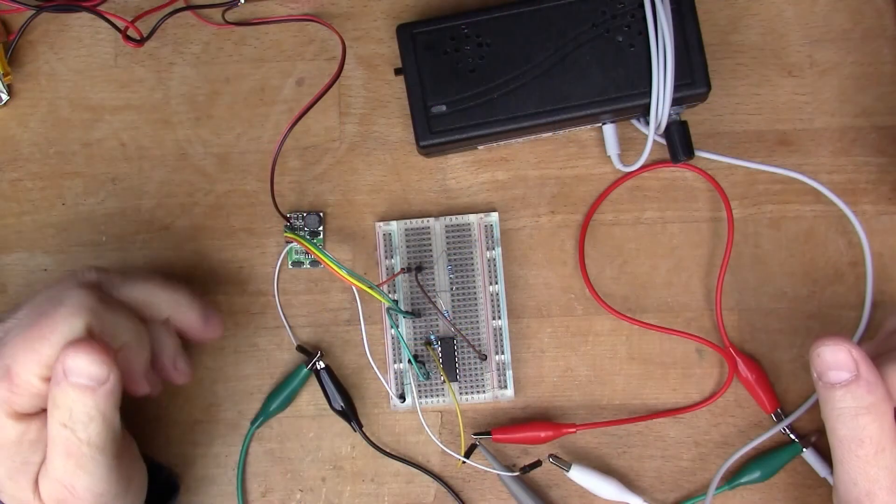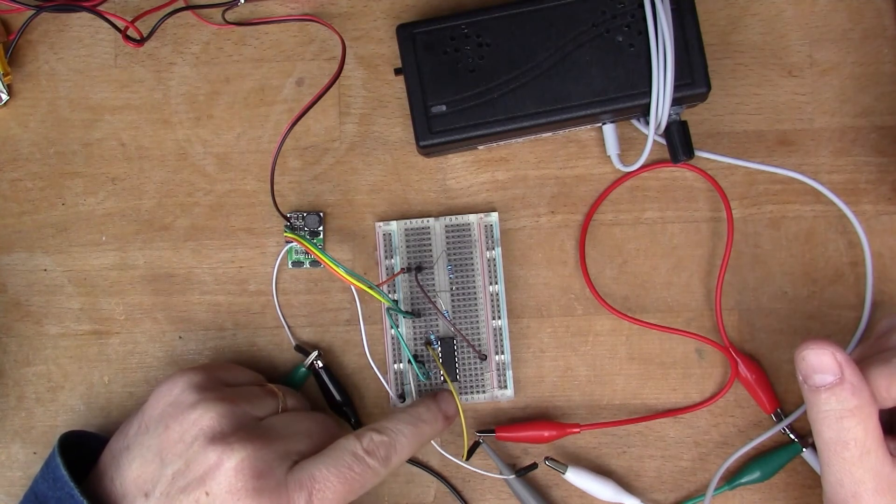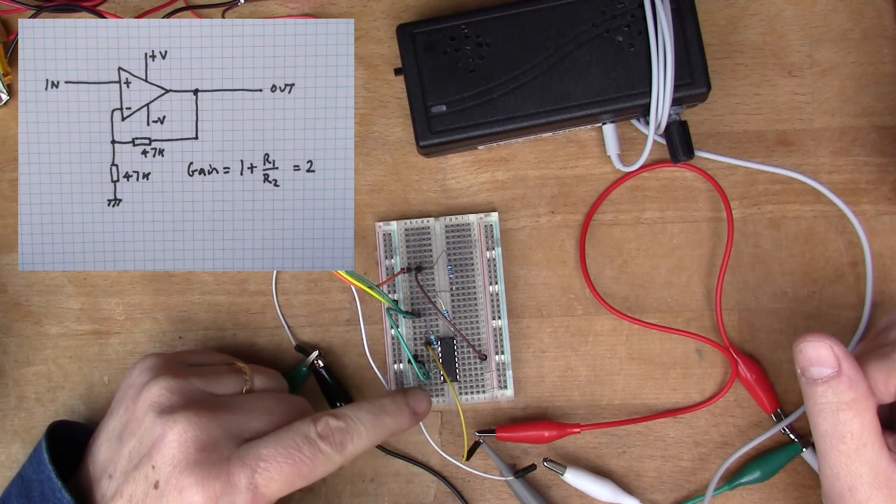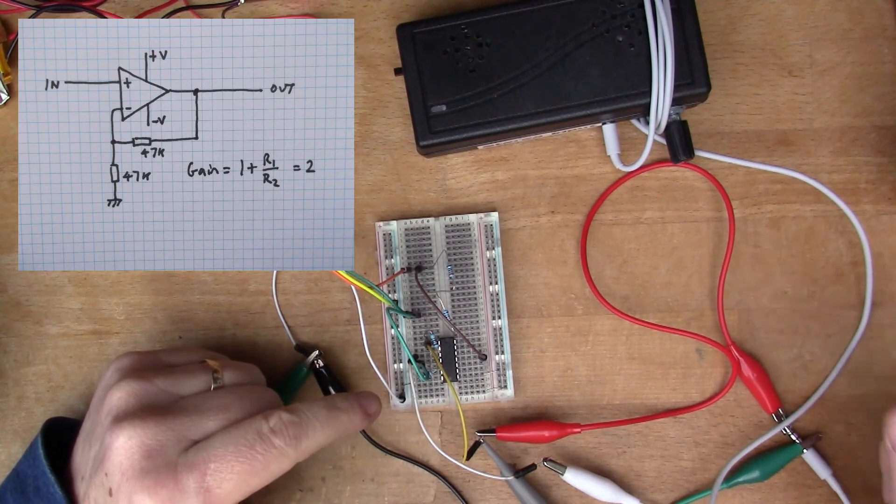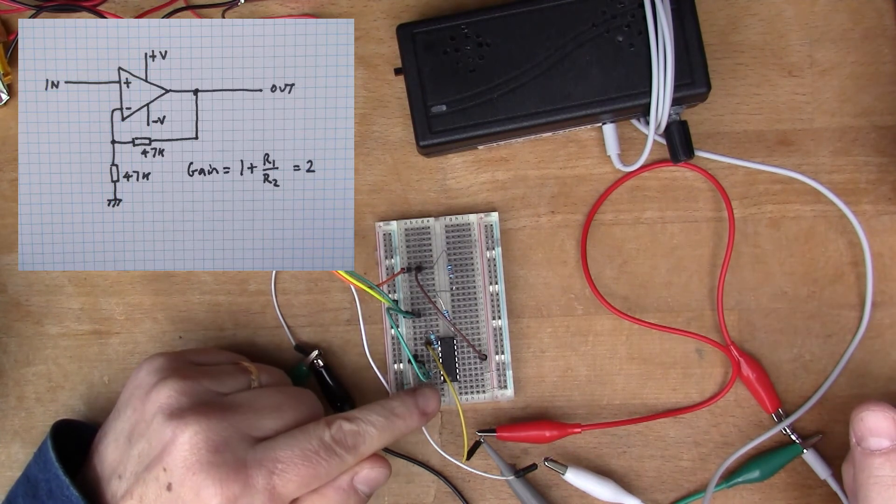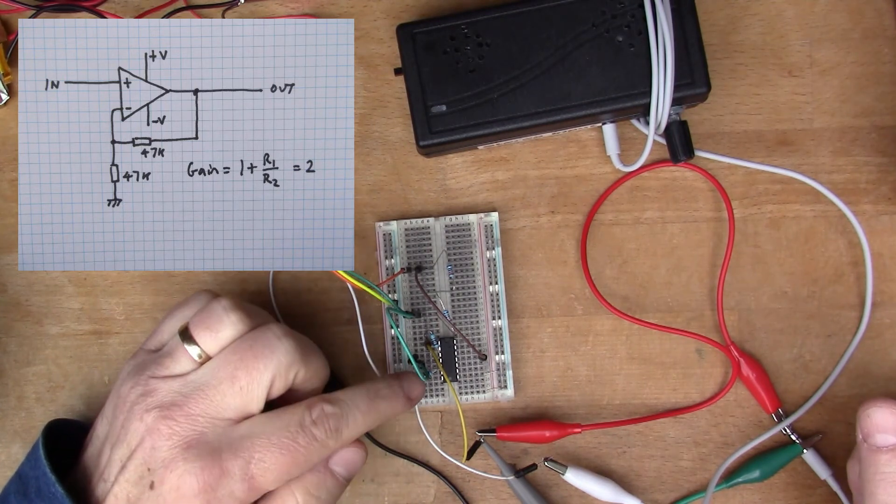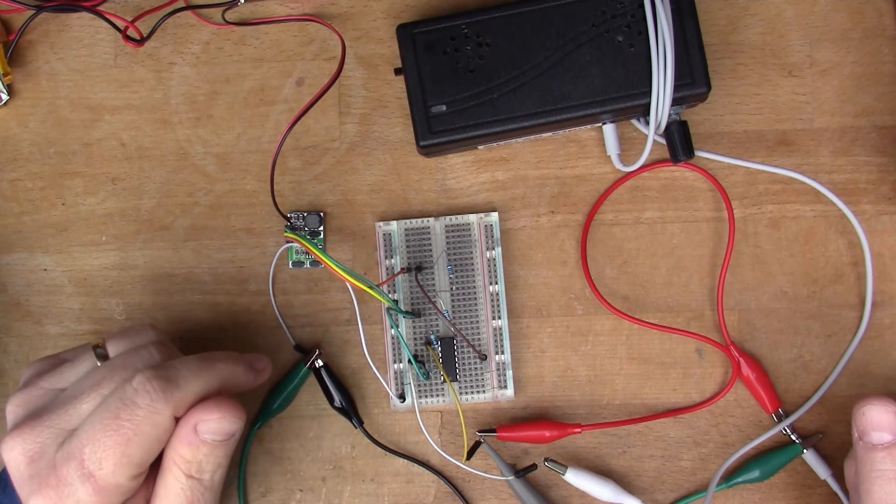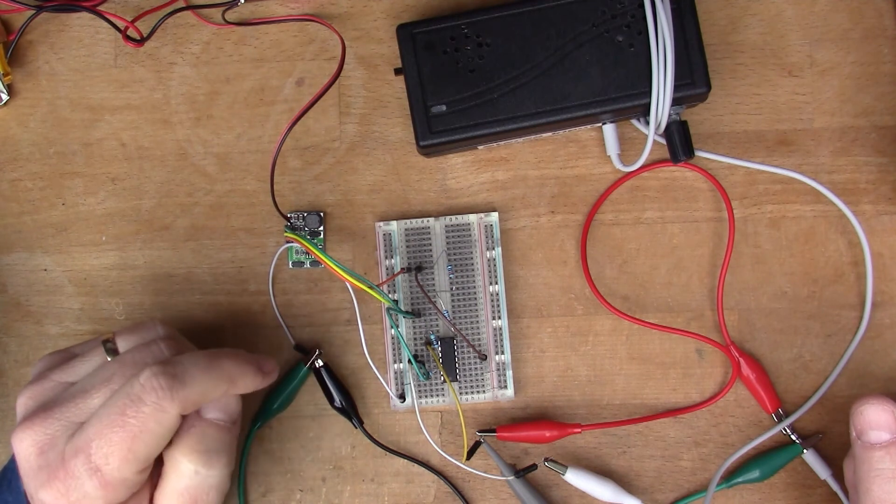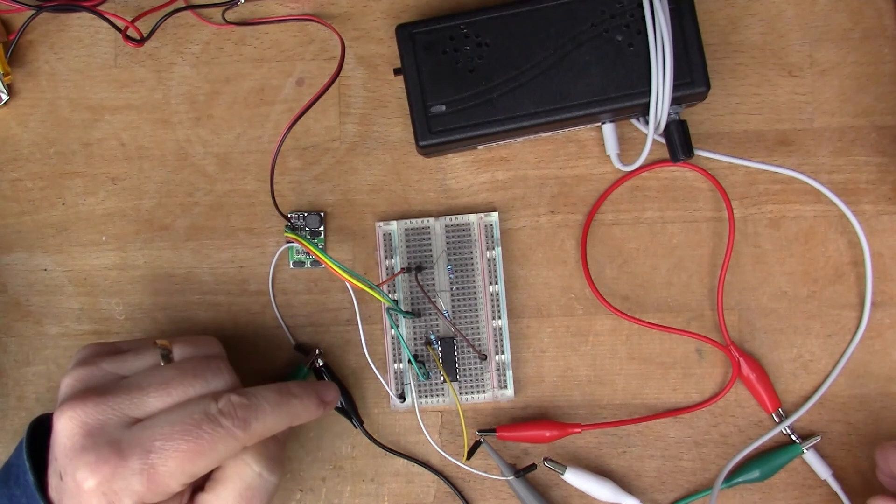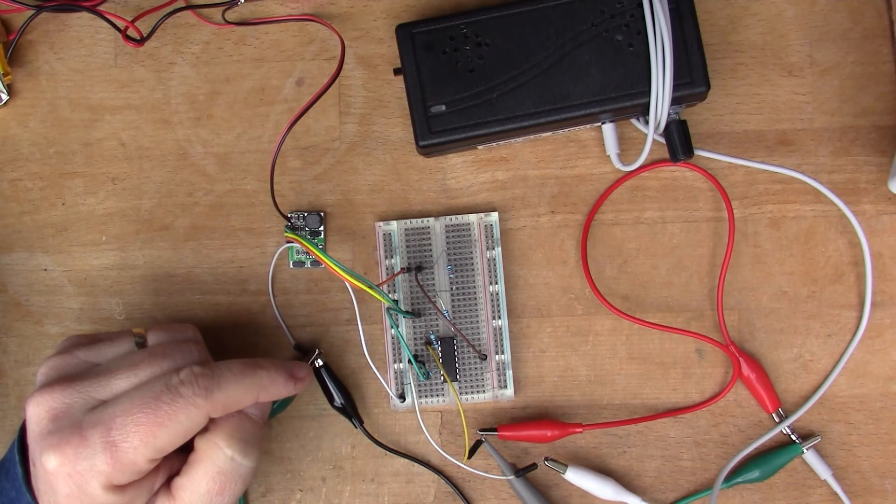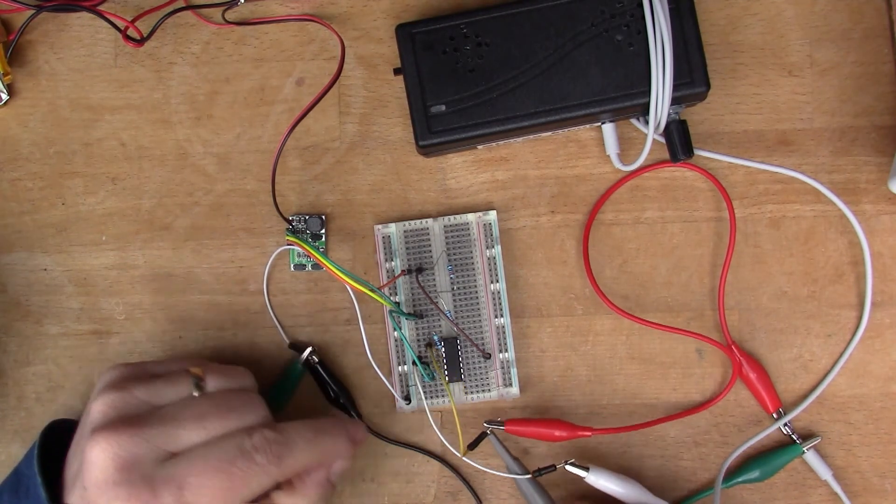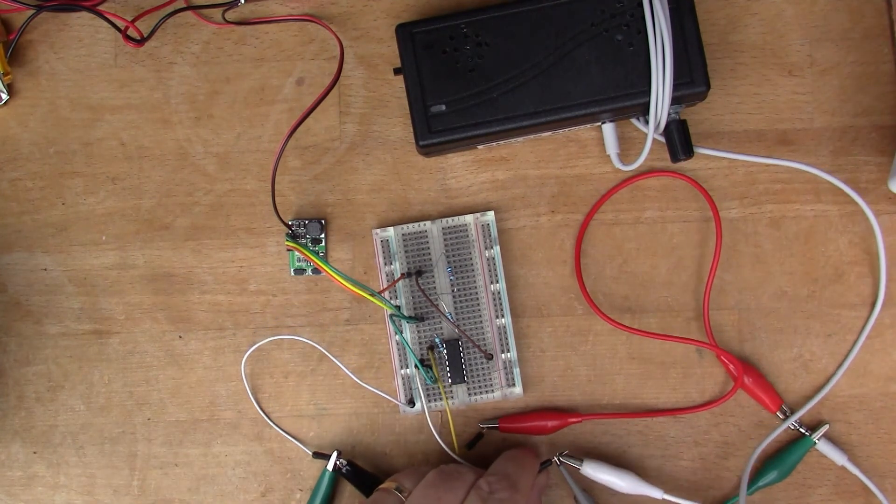Now I've got the split rail power supply connected up to a quad op amp here, the LM324, in a non-inverting configuration with a gain of 2. What I've got coming in on the input is a one kilohertz signal from the oscilloscope, just testing to see if we get a nice pure tone. Let's check that the amp's on and connect up the one kilohertz tone. I'll connect the scope on the input for a moment.